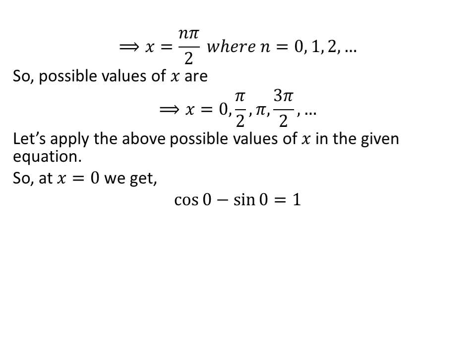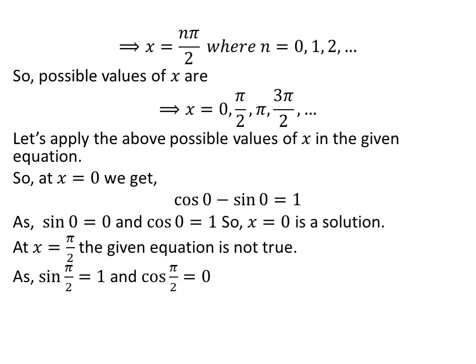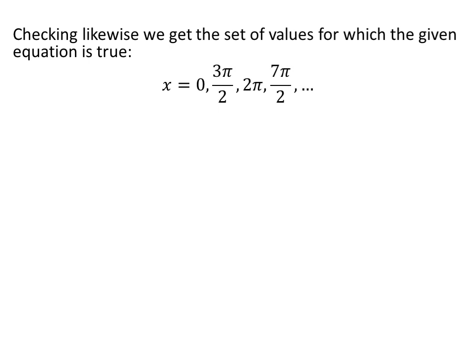Let us apply x equal to 0. We get cosine of 0 minus sine of 0, which equals 1. Since sine of 0 is 0 and cosine of 0 is 1, x equal to 0 is a solution. For x equal to half of pi, sine of half of pi is 1 and cosine of half of pi is 0, so the equation is not satisfied — x equal to half of pi is not a solution. Checking likewise, the set of solutions for which the given equation is true are: 0, half of 3pi, 2pi, half of 7pi, and so on.